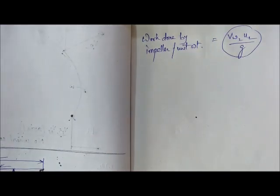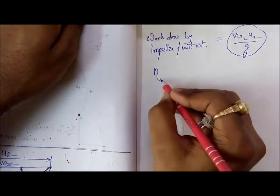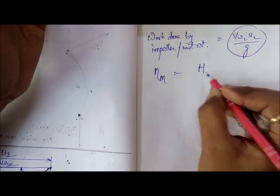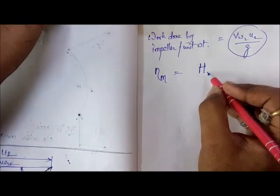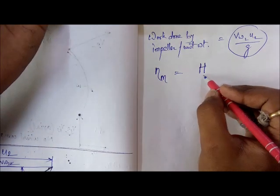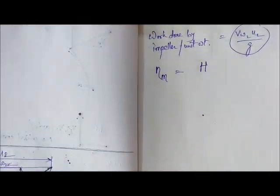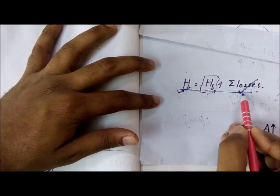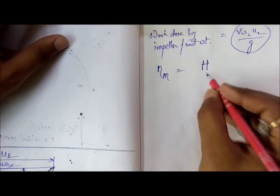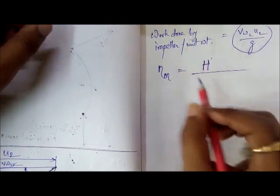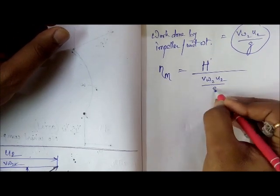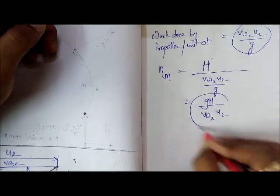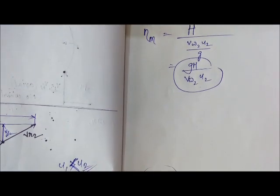So work done by the impeller per unit weight is Vw2 U2 / g. Now, manometric efficiency is the ratio of manometric head H to the work done by the impeller per unit weight. That is: η_manometric = g H / (Vw2 U2). You do not need to memorize this formula — you know its derivation.